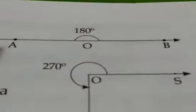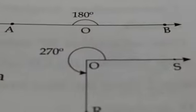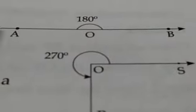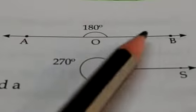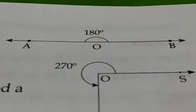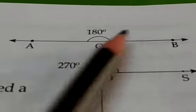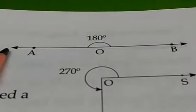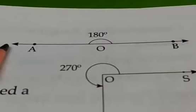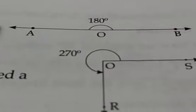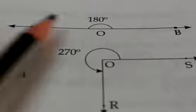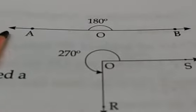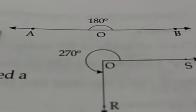Now let us learn what do you mean by straight angle. An angle whose measure is exactly 180 degrees is called a straight angle. It is a half turn — it is just half of the protractor.